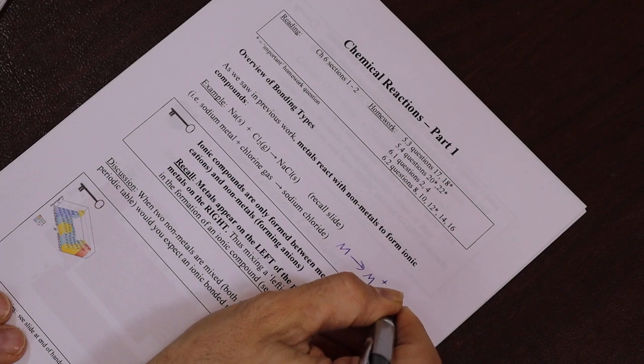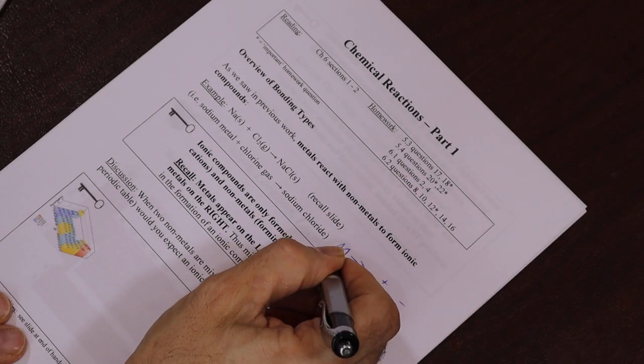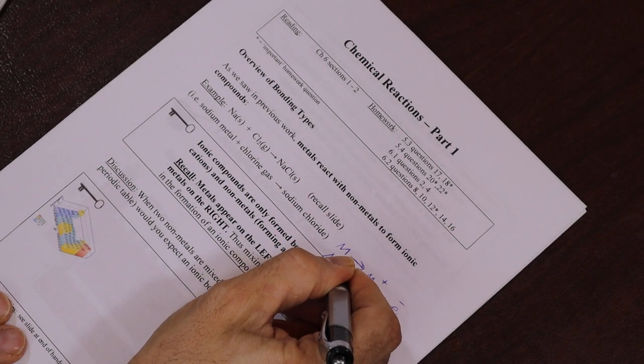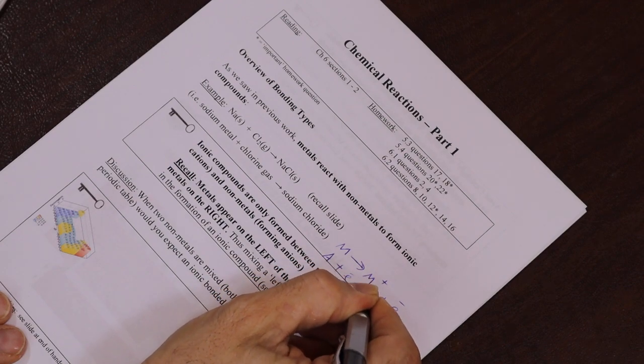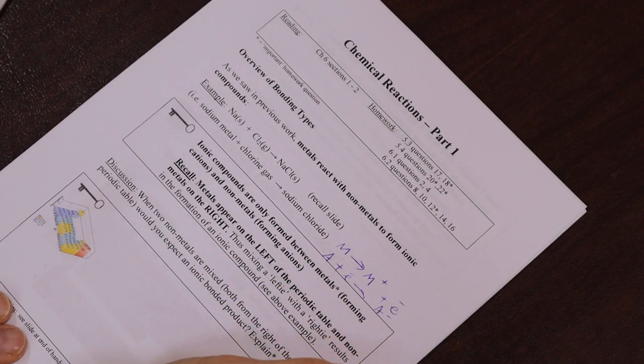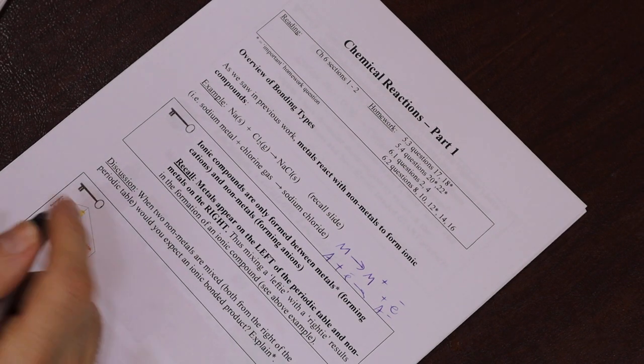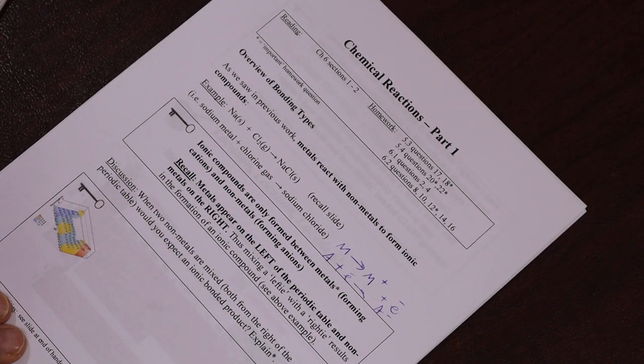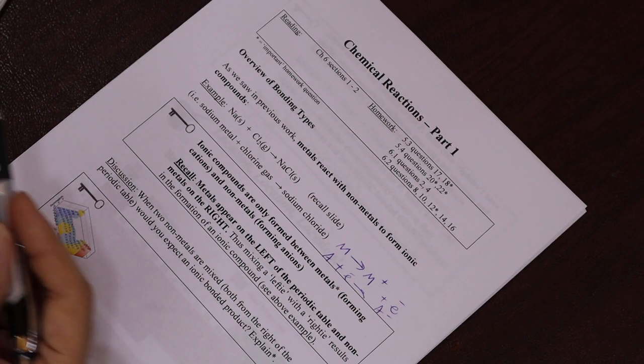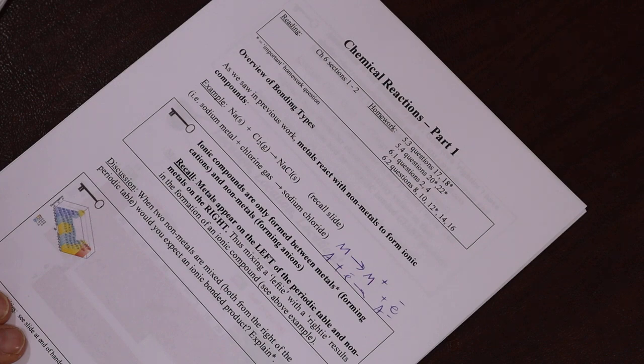And non-metals gain electrons to form minus ions. That's why we have Na+ Cl- for example as a formula. Okay, so as you see in the box here, ionic compounds are only formed between metals forming cations, which are plus ions, and non-metals forming anions, which are minus ions.